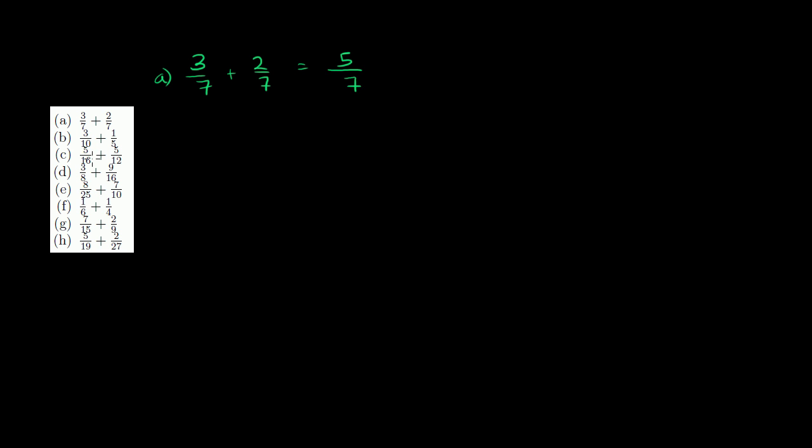Let me do every other. It would take forever to do all of them. Well, not forever, but just more time than I want to spend. So c is 5/16 plus 5/12. Our denominators are not the same. We have to find a common denominator, which has to be the least common, it actually could be any common multiple of these, but for simplicity, let's do the least common multiple.